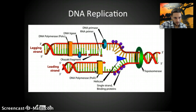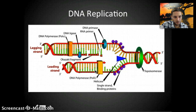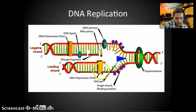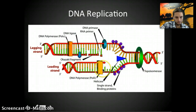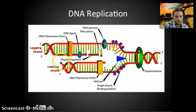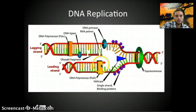A different enzyme called DNA polymerase — specifically DNA polymerase 3 — links nucleotides together to form a new strand, using the pre-existing strand as a template. Here is DNA polymerase moving along this strand, moving in a 5' to 3' direction. You can see this strand starts from 5' and moves toward what will eventually become the 3' end, adding new nucleotides as it goes.